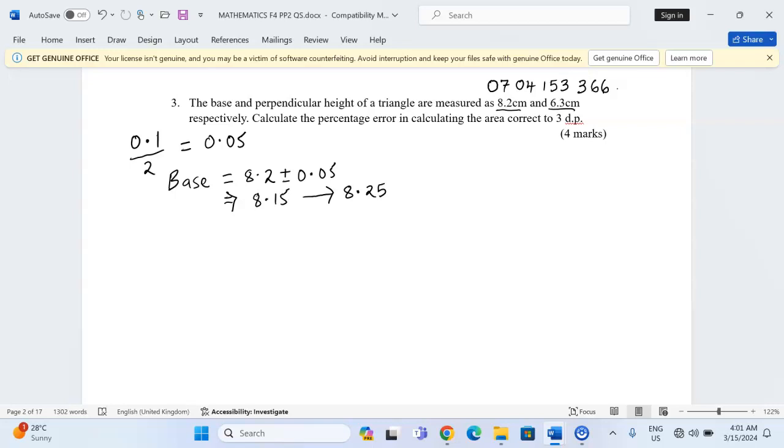So that is the limit of the base. We can check the perpendicular height. The perpendicular height is going to range between 6.3 and the same absolute error of 0.05 will either be added or subtracted. Meaning that the height is going to range from 6.25, the lower limit, up to 6.35 centimeters, the upper limit.